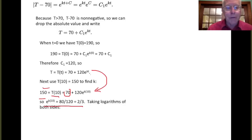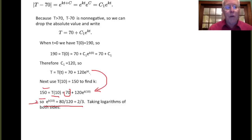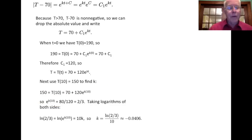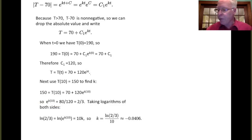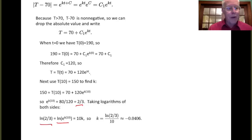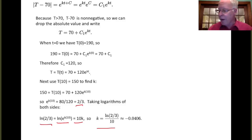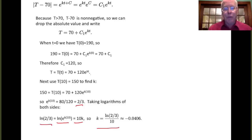To get at k in the exponent, we take the log of both sides. We have log(2/3) = log(e^(10k)), and using the log-exponential inverse property, log(e^(10k)) = 10k. Solving for k gives k = log(2/3) / 10, and the calculator gives approximately minus 0.0406.